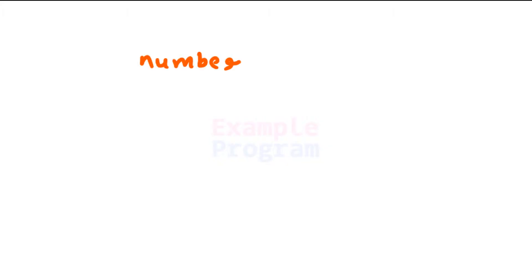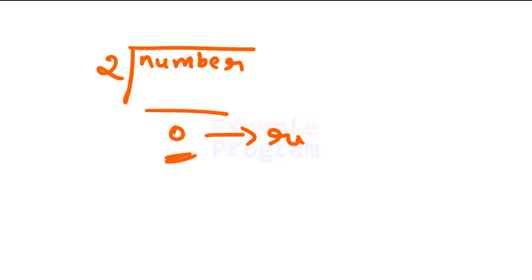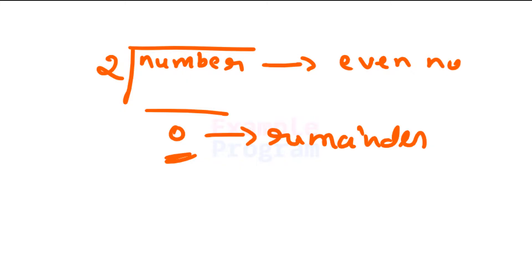How can we say that a number is even or odd? If you have a number and when you divide it by 2, if you get a remainder of 0, then this number is said to be an even number. If the remainder is 1 or any non-zero value, then this number is said to be an odd number.